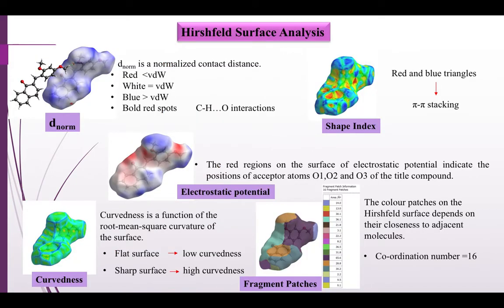Using the CIF file as input to the Crystal Explorer 17.5, Hirschfeld surfaces were mapped over d-norm, electrostatic potential, shape index, curvedness, and fragment patches to represent the molecular interactions visually. D-norm is a normalized contact distance. D-E and D-I are the distances between the Hirschfeld surface and the external and internal molecules respectively, normalized by the Van der Waals radius of the atoms involved. The sum of the two quantities is the D-norm property.